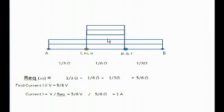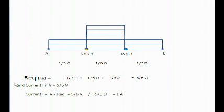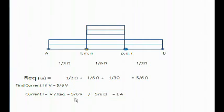In the equivalent circuit: three 1 ohm resistances in parallel give 1/3 ohm; six 1 ohm resistances in parallel give 1/6 ohm; and three 1 ohm resistances in parallel give 1/3 ohm. These three are in series, so the total equivalent resistance between A and B is 1/3 + 1/6 + 1/3 = 5/6 ohm. Now, with voltage V = 5/6 volt and equivalent resistance = 5/6 ohm, the current I = (5/6) / (5/6) = 1 ampere.